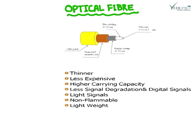The main advantages of optical fiber are: first, it is thinner; second, it is less expensive; third, it has higher carrying capacity; fourth, there is less signal degradation, and digital signal loss is near about 0% compared to conventional copper wire. Fifth, it uses light signals. Sixth, it is non-flammable — no short circuit issues. And seventh, it is lightweight.